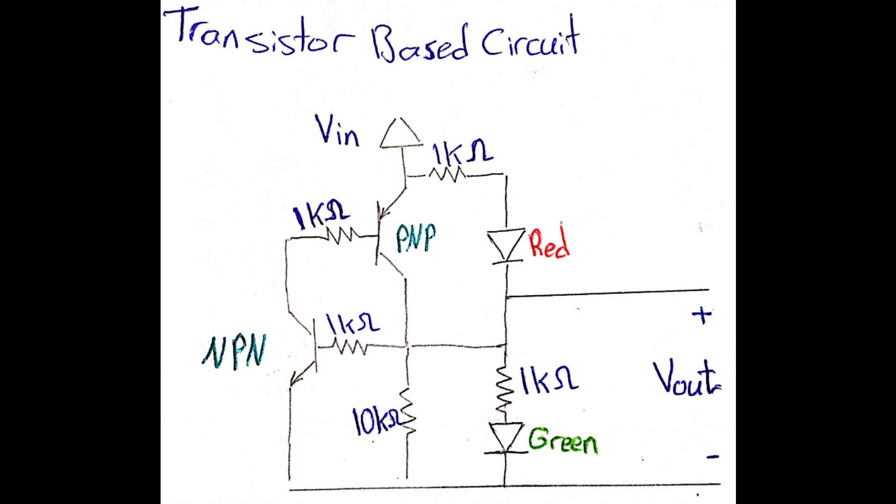When applying potential difference to the input terminal of this circuit at its initial state, a potential difference will be formed at this node, since, in microseconds of time, electrical current will flow from the input terminal to ground, taking this path.